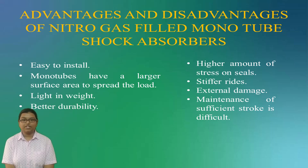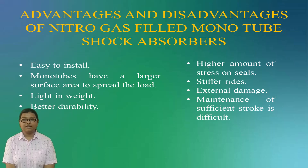They are lighter in weight. Single-tube construction also allows for a larger internal working area, reducing stress and fatigue for better durability. Disadvantages include: higher amount of stress on the seals due to high-pressure nitrogen gas; stiffer ride as a result of high-pressure gas; any external damage will affect the inner cylinder; and maintaining sufficient stroke is difficult because the oil and gas chambers are positioned serially.